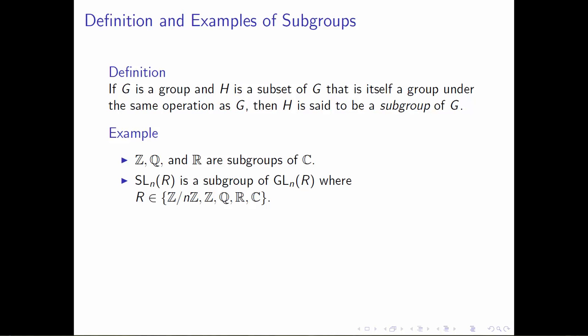In a similar way, we've seen before that SL_n(R) and GL_n(R) — the special linear group and the general linear group of n×n matrices — work under matrix multiplication. Here R is some number set: the integers mod n, the integers, the rational numbers, real numbers, or complex numbers. We've seen that both of these collections of matrices form groups under matrix multiplication, and by definition SL_n(R) will always be a subgroup of GL_n(R).